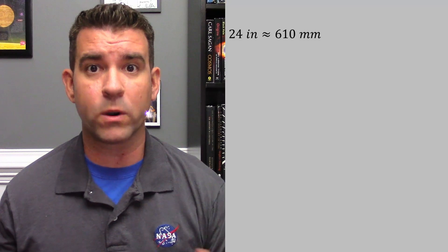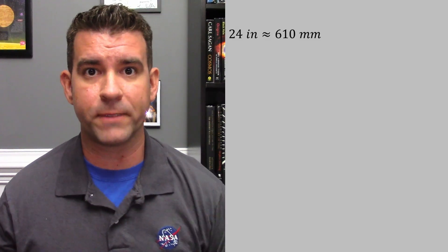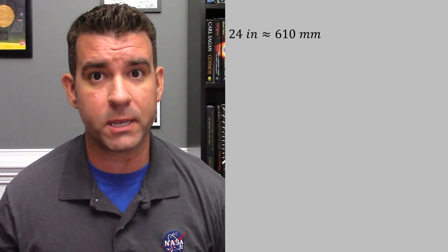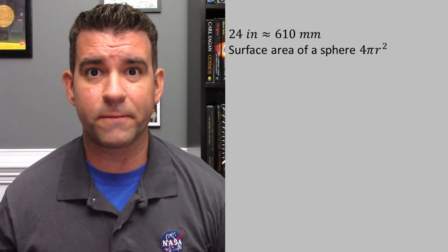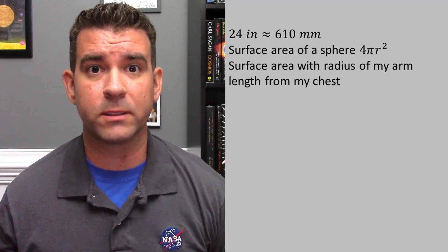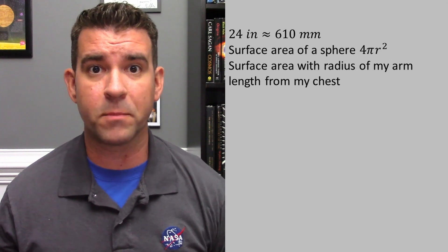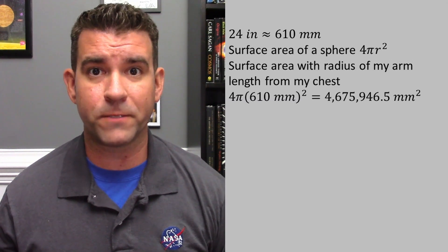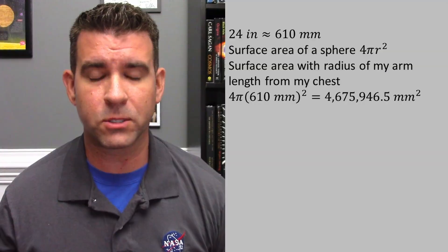I am 5 foot 9 inches. When I hold my arm straight out, it is 24 inches from my chest to my middle finger, or approximately 610 millimeters. Using the formula for the surface area of a sphere, if we calculate the surface area of the sphere made by the radius of my arm, we get a surface area of 4.6 million square millimeters.